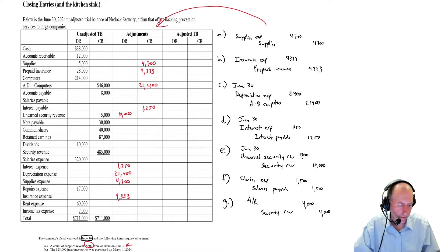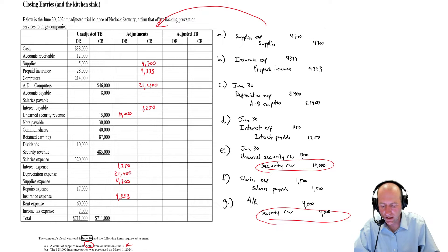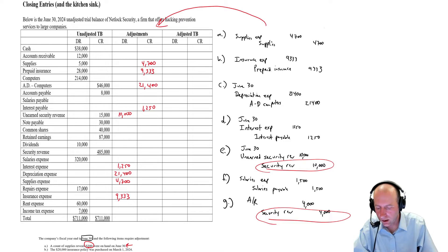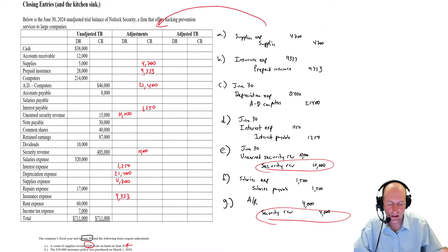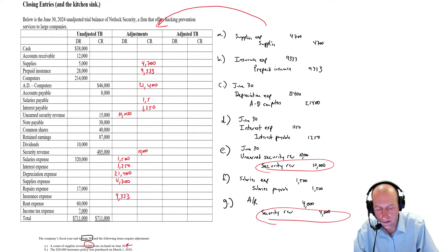We actually credit security revenue twice — we credit it here and then in journal entry G. So I either have to make room in the cell for it, or just know that I have a $10,000 credit and a $4,000 credit coming. I put $10,000 and squeeze it over to the left because I know another $4,000 is coming. Debit salaries expense, credit salaries payable, $1,500 — salaries expense $1,500, salaries payable $1,500.